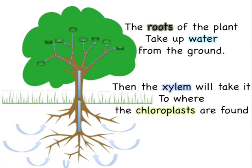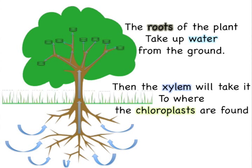The roots of the plant take up water from the ground. Then xylem will take it to where the chloroplasts are found.